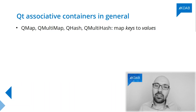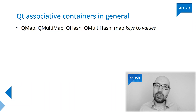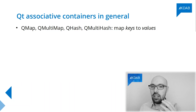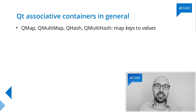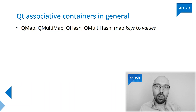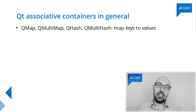The ones that are available in Qt are these four: QMap, QMultiMap, QHash, and QMultiHash. They all behave pretty much the same — they all map keys to values. There are a few differences between them.